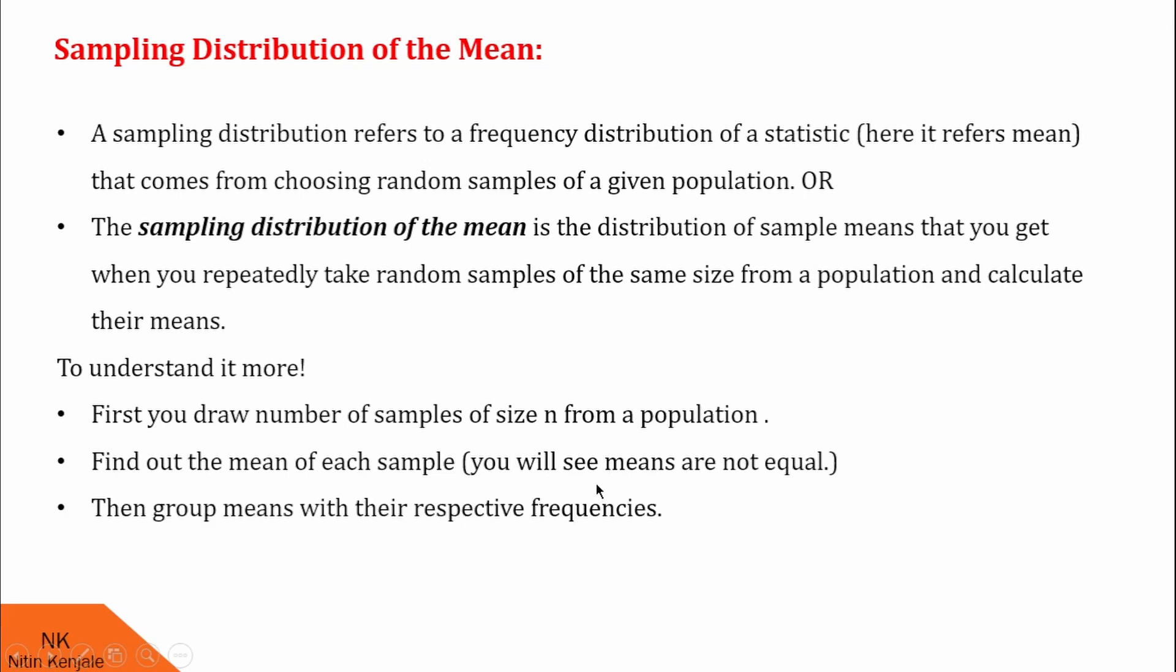Then group means with their respective frequencies. The frequency distribution so obtained is called the sampling distribution of the mean. Now let me make you understand with the help of an example.